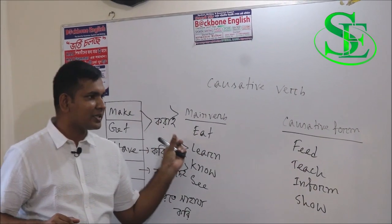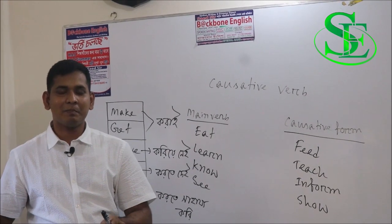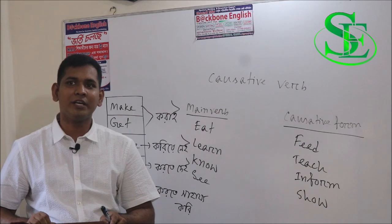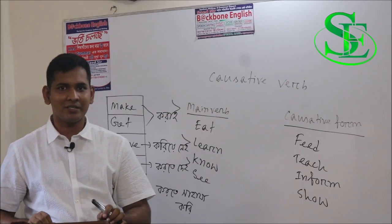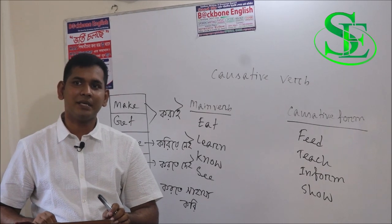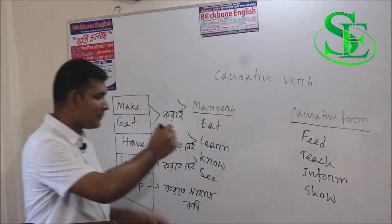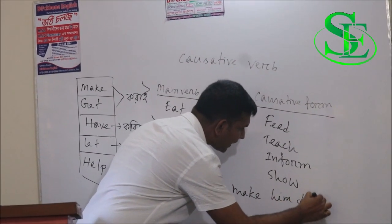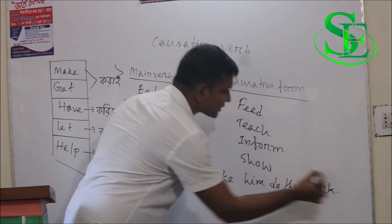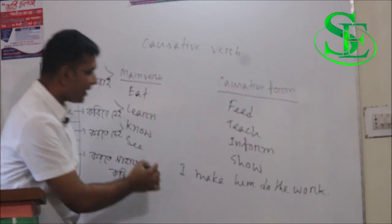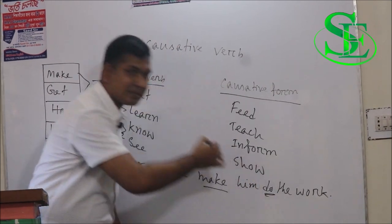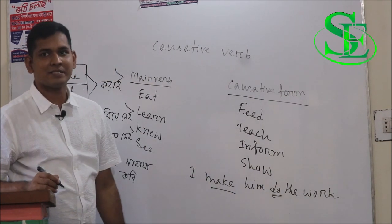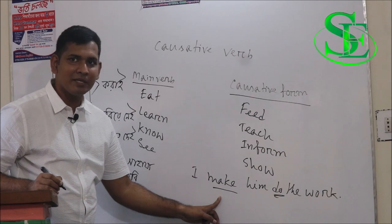We have to know a basic rule about causative verbs: by tense, the causative verb will be changed but the main verb will never be changed. For example, 'I make him do the work' — here 'make' is the causative verb and 'do' is the main verb. So by tense, 'make' will change but 'do' will never change.